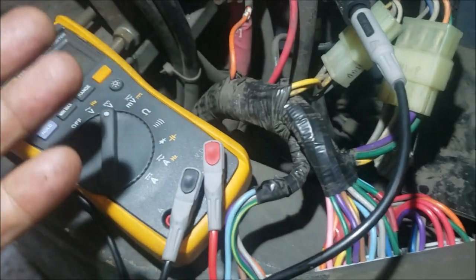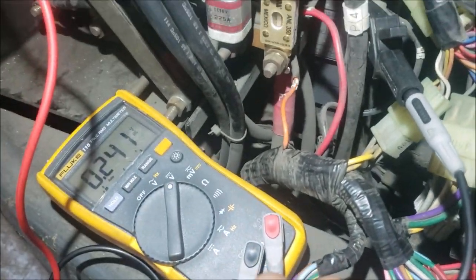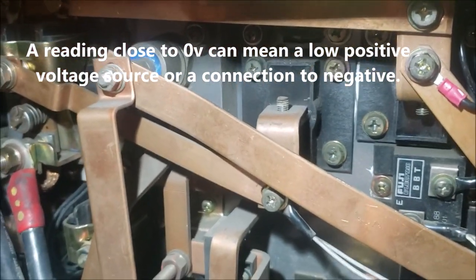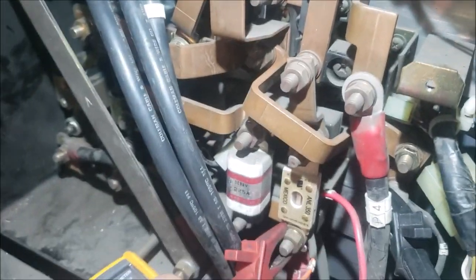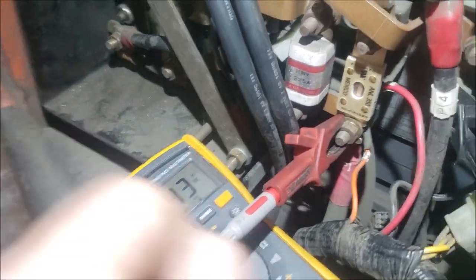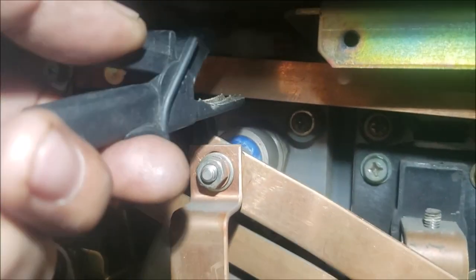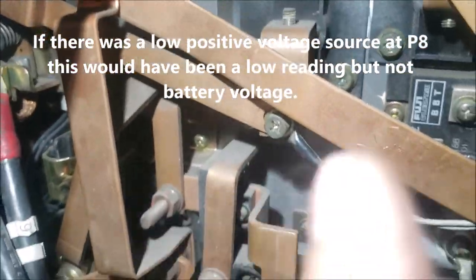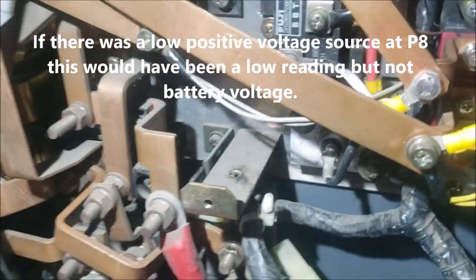First thing is, do I really have a negative on the p8 link? What we're gonna do is transfer the red lead to battery. You can see that's battery voltage. Now I'm gonna transfer the black lead into the p8 which is right here. The reading is battery voltage. So p8 has a direct connection to the negative of the battery.